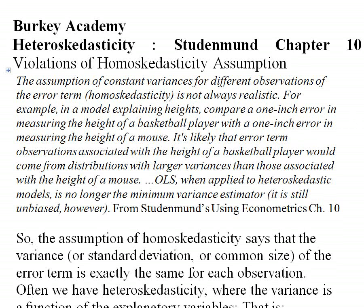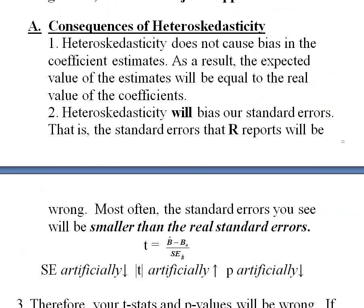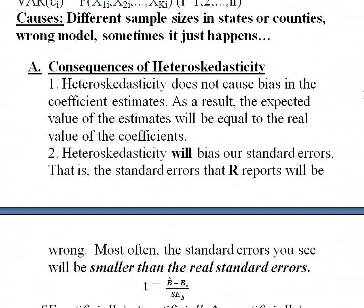Welcome to heteroscedasticity part B. In the first part — a quick 15-second review — we talked about what homoscedasticity and heteroscedasticity are. Basically, heteroscedasticity is when the variance, or the size, of the residuals — the error term — is not constant; it's not drawn from the same distribution for all observations. We also talked about how you can test for heteroscedasticity and the consequences of heteroscedasticity.